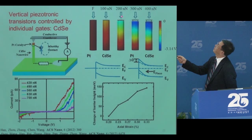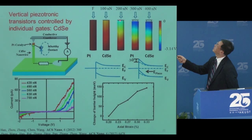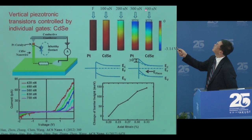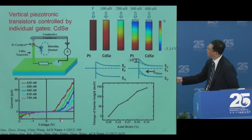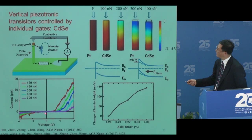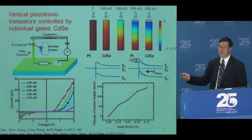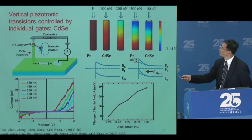We can do this with vertical nanowires by applying mechanical strain through an AFM, generating polar charge at the interface. The turn-off voltage shifts with increasing force — experimentally measured to shift from 0.6 volts to about 1.5 volts when force increases from 420 nanonewtons to 700 nanonewtons. This internal voltage shift is due to the presence of the polar charge. Fixing bias at 1 volt, the device switches on and off with strain — this is called a strain-gated transistor.